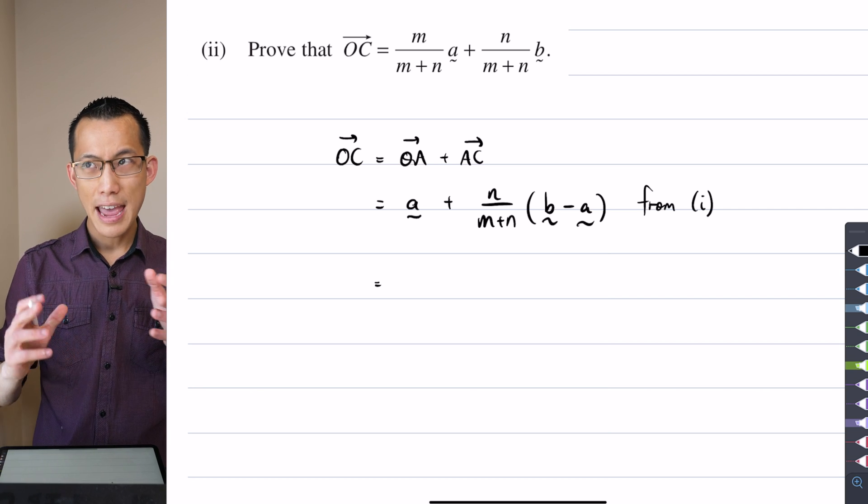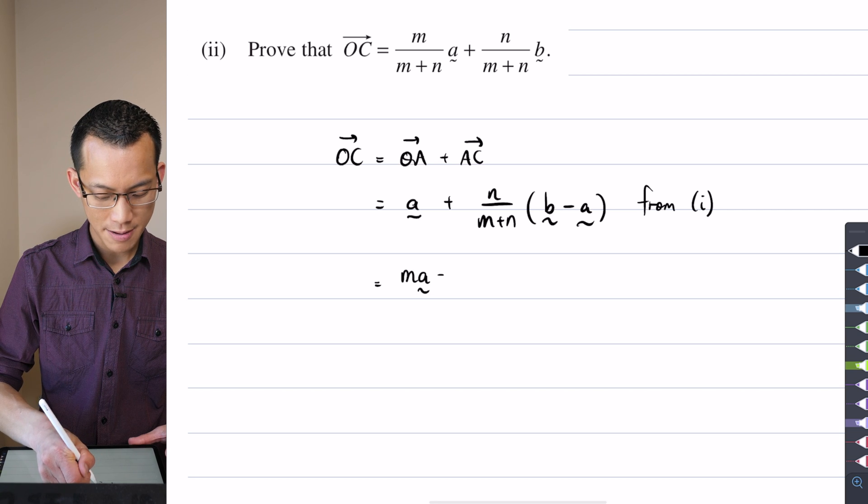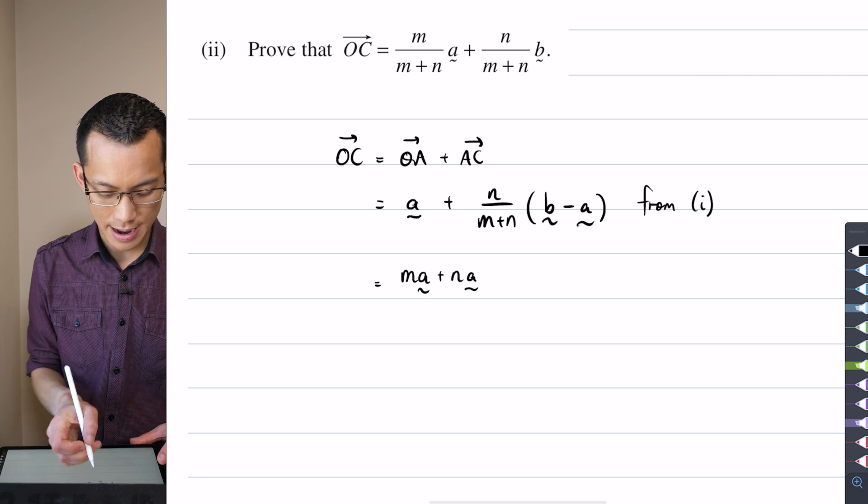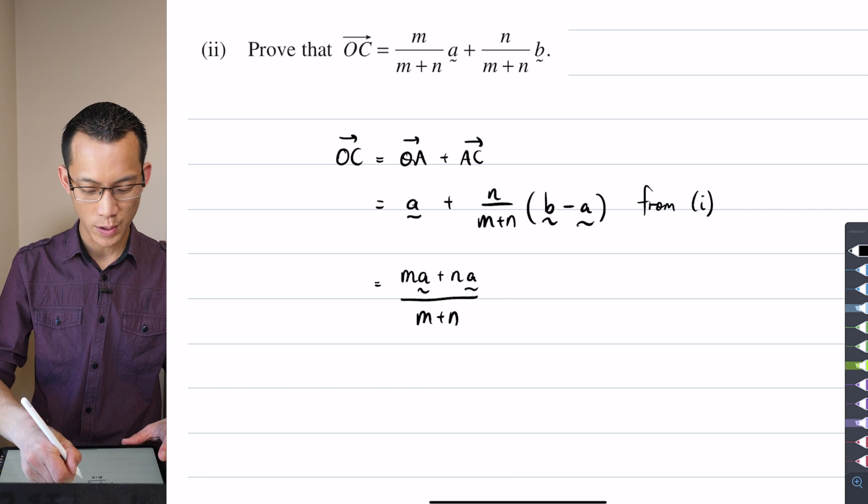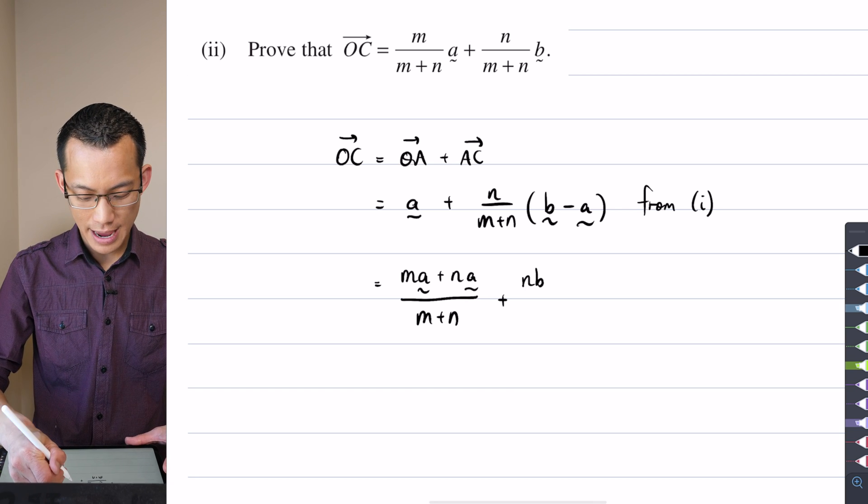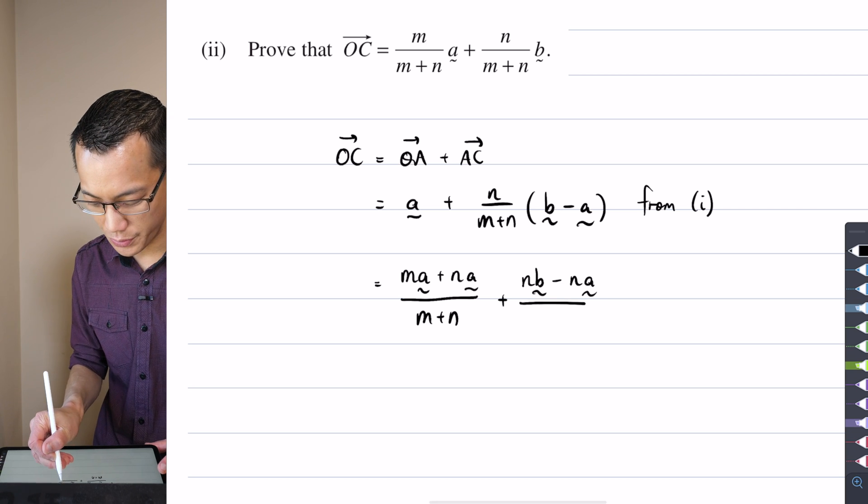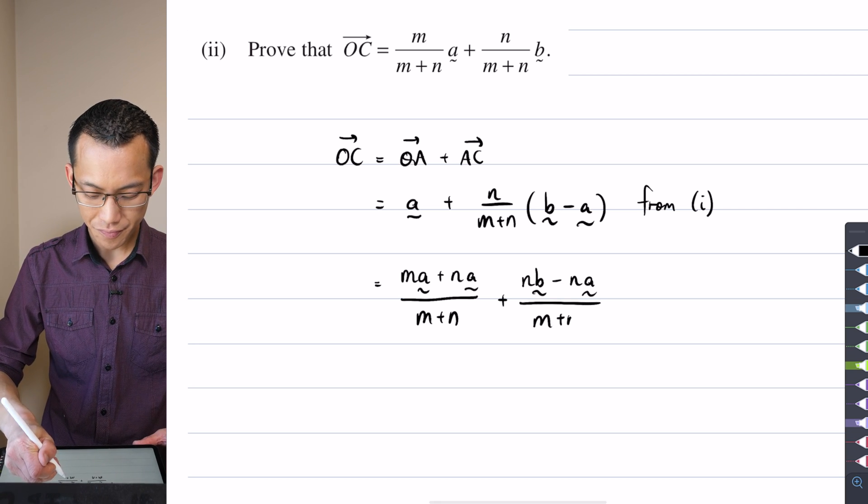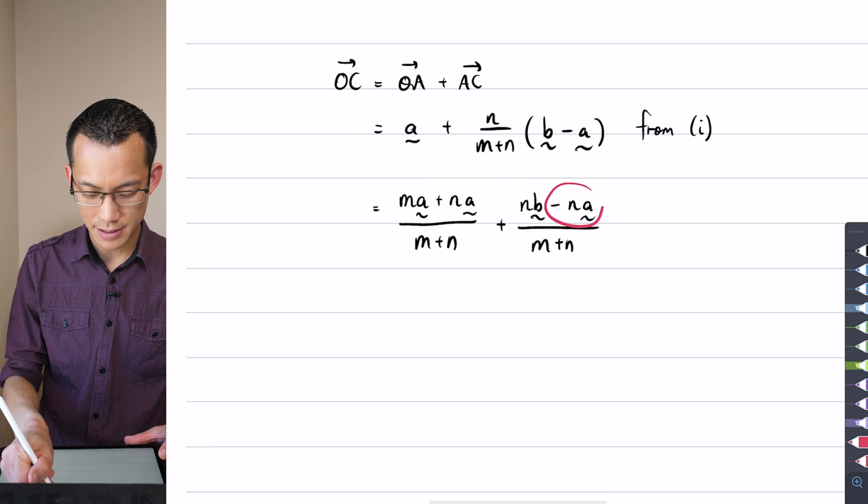I hope you can see that that first fraction is just equivalent to the little a. I'll expand this while I'm at it, so that gives me an nb minus an na, and that's all divided by the same denominator. And then you just get some nice canceling happening. You can see this minus na and this plus na, they're going to go.